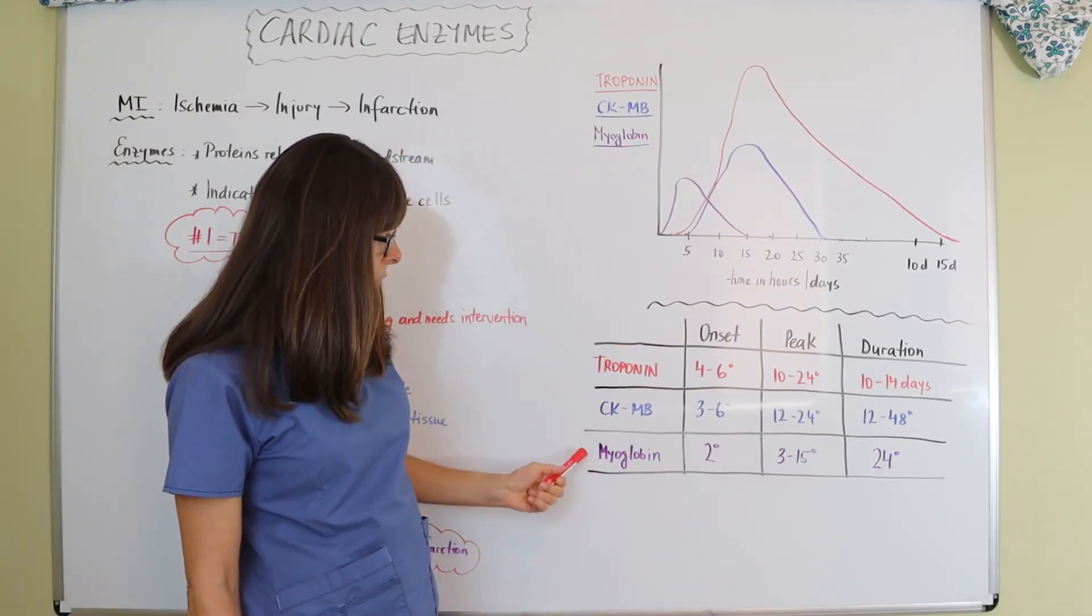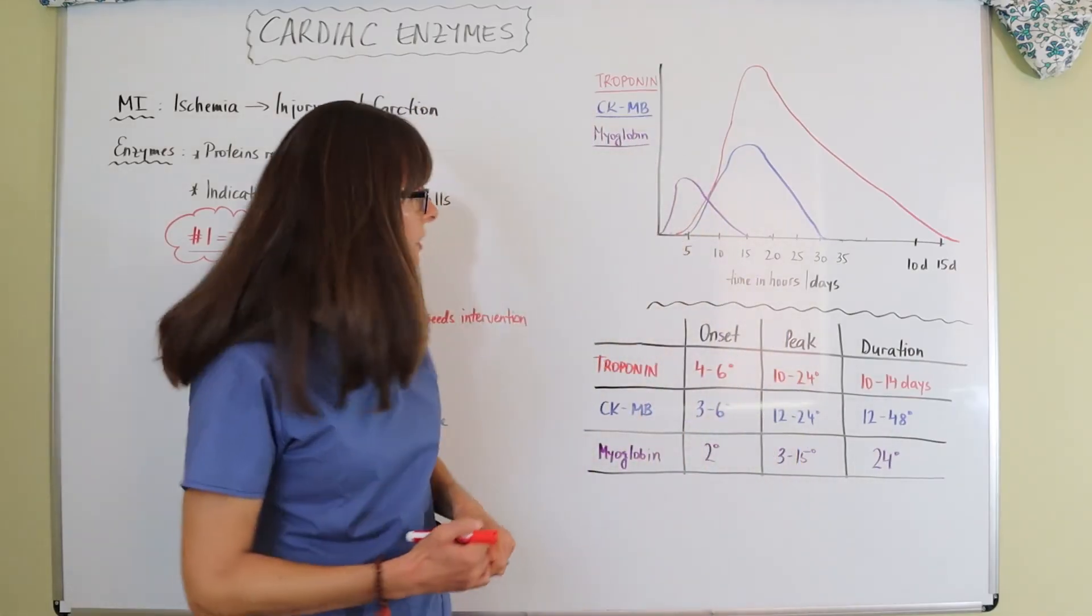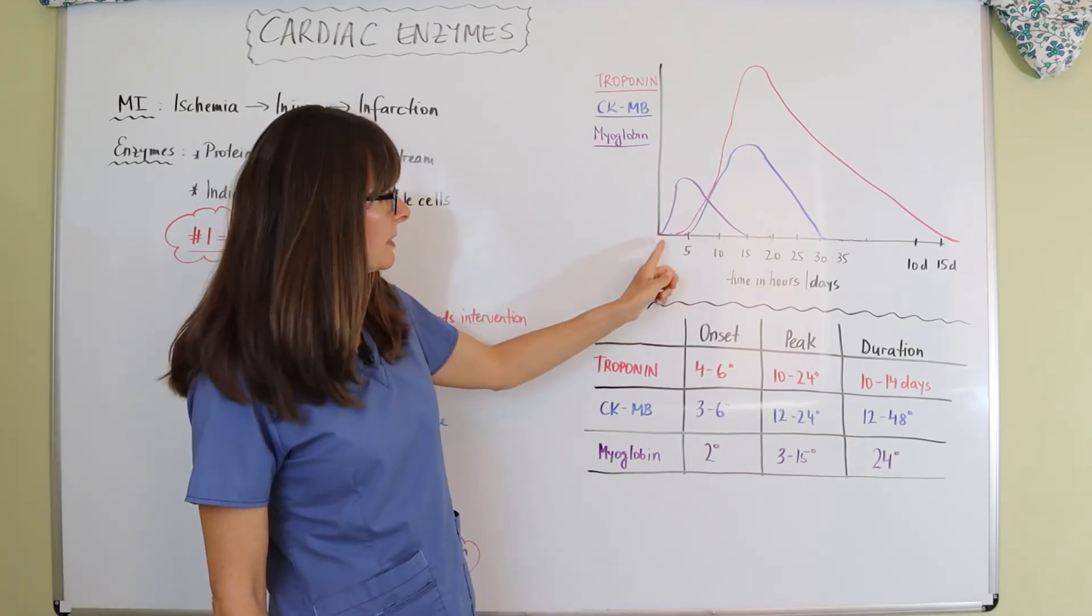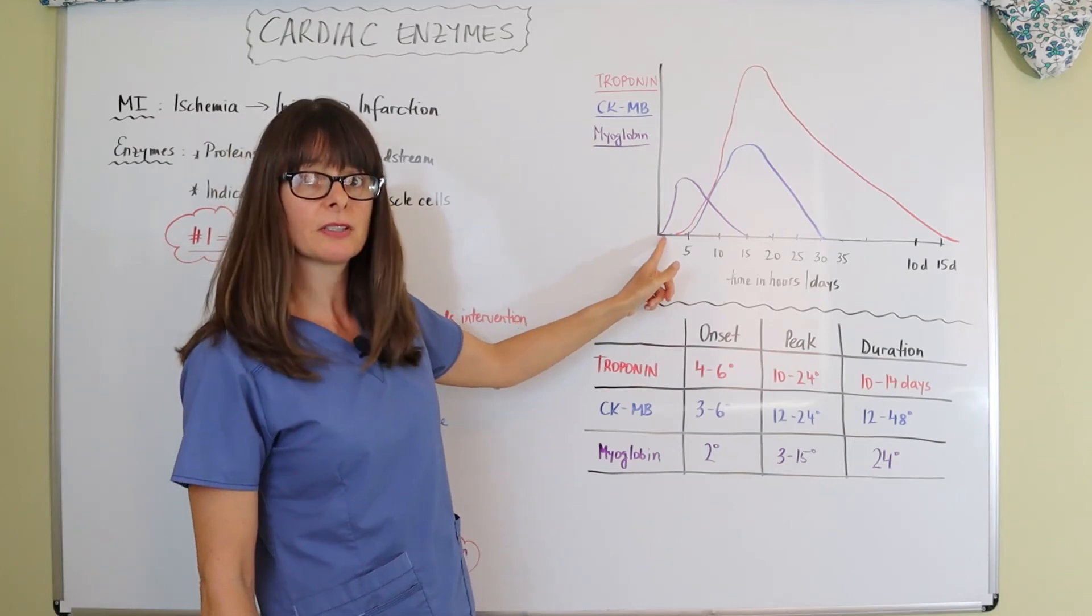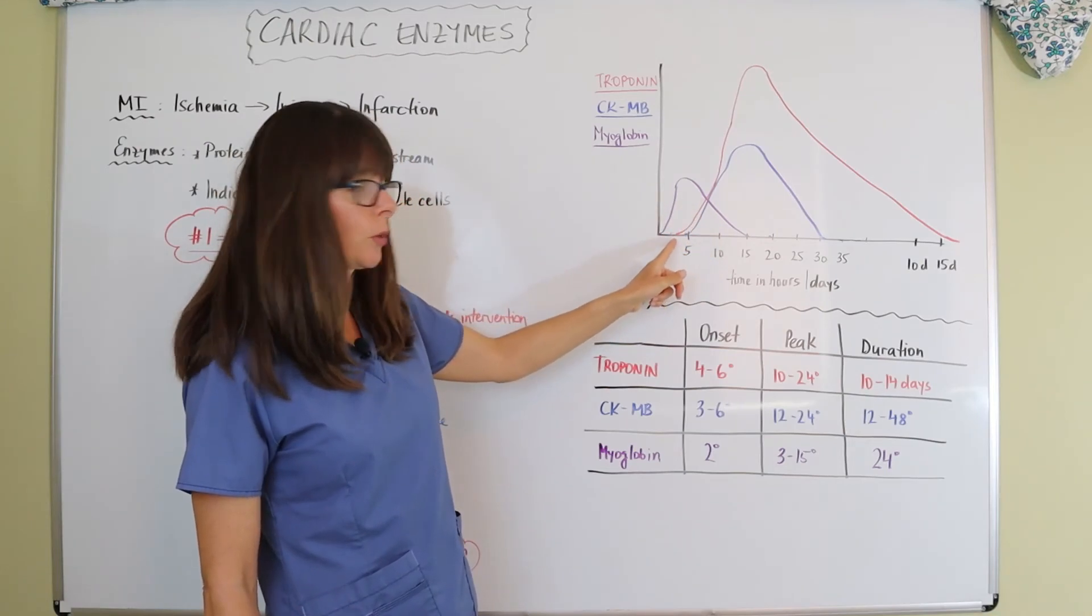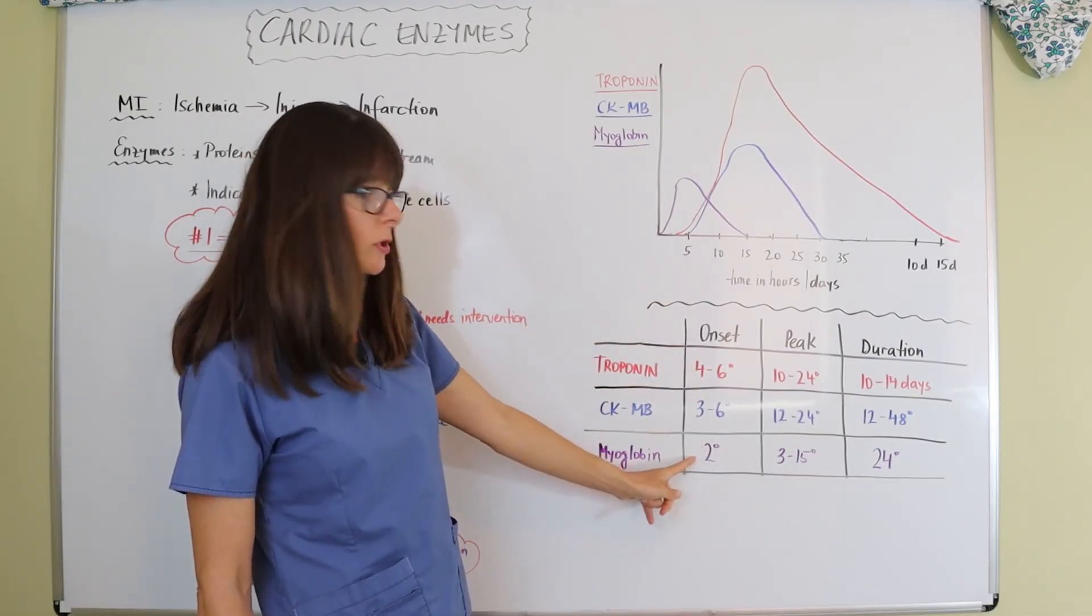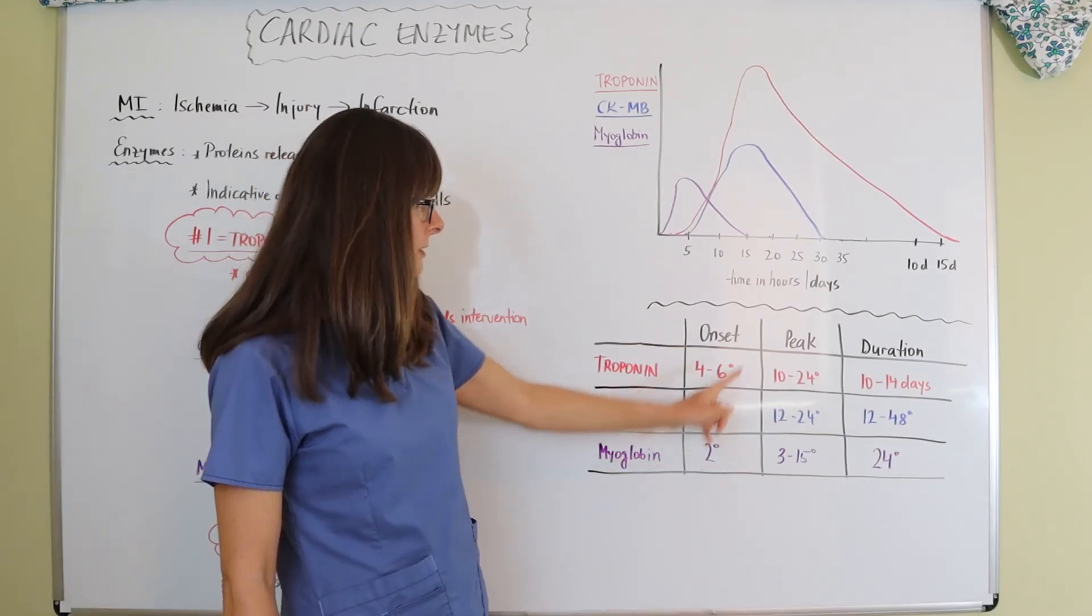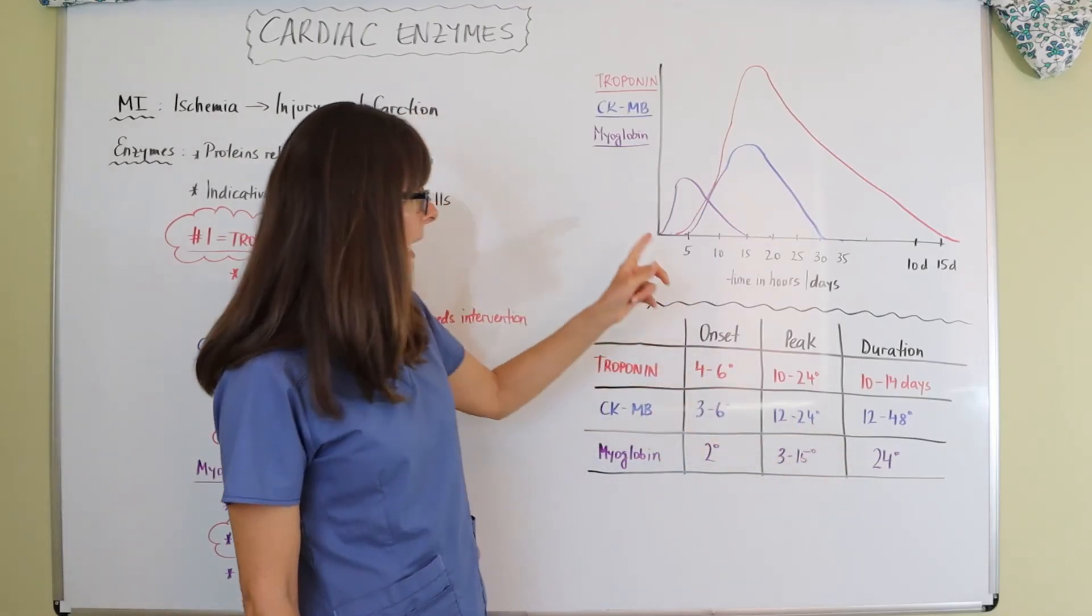And then myoglobin here, remember I said that it's an early indicator of injury or infarction. So if the patient comes in shortly after they start having symptoms, only the myoglobin will be elevated. If they come in, let's say two hours after the symptoms started, we won't see any of the CKMB or the troponin elevated, but the myoglobin might be elevated because it starts as soon as two hours after the injury occurs. And so it peaks at three to 15 hours and it's very short lived for about 24 hours.